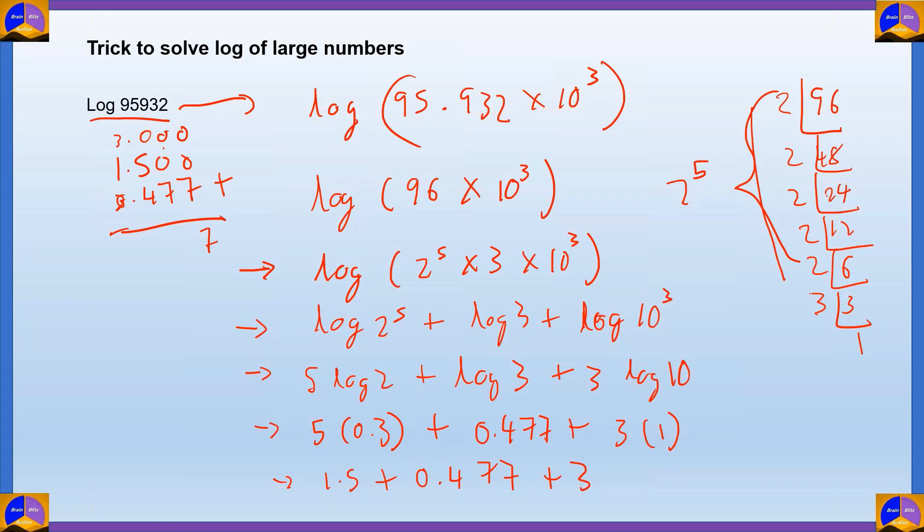0 plus 0 plus 7 gives you 7. 0, 0, 7 gives you 7. And 5 plus 4 gives you 9. And then, 3 plus 1 gives you 4. So, that gives you the value of log 95932 as 4.977.